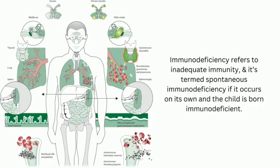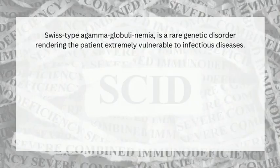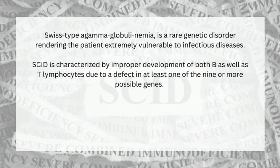Immunodeficiency refers to inadequate immunity. It is termed spontaneous immunodeficiency if it occurs on its own and the child is born immunodeficient. One such severe immunocompromised condition is SCID, or Severe Combined Immunodeficiency, also known as Swiss type agammaglobulinemia — a rare genetic disorder rendering the patient extremely susceptible to infectious diseases.